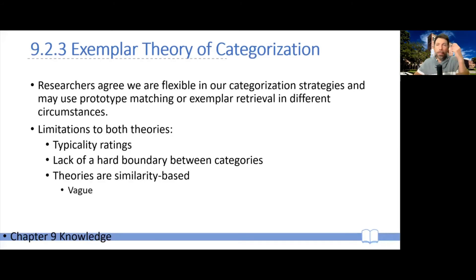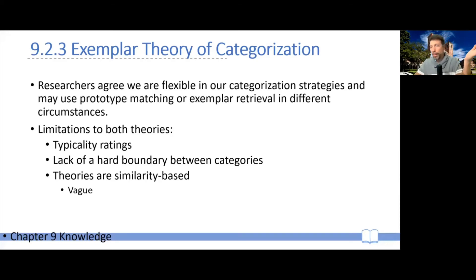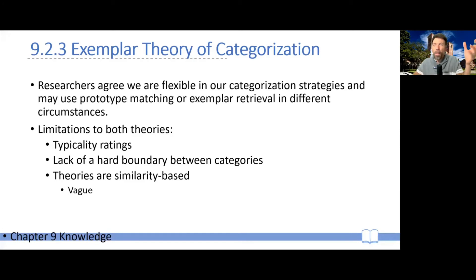Finally, both theories are based on the idea of similarity — that the next example you meet is similar to either a prototype or previous examples you've encountered. But as a notion, similarity is actually extremely vague. The frame of reference for similarity — what matters for similarity — is very unclear.